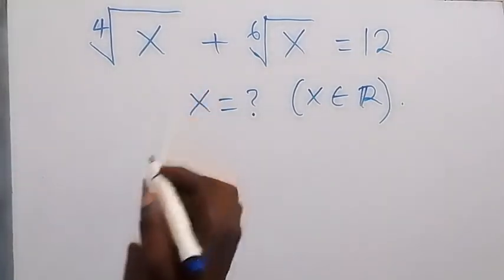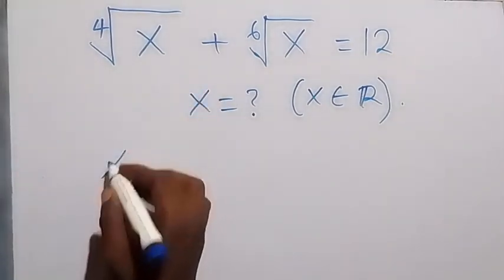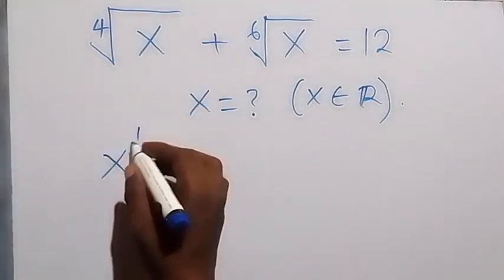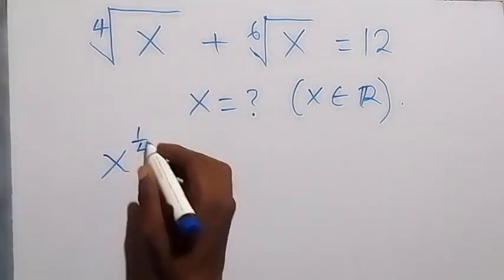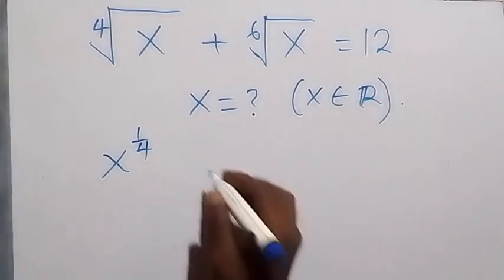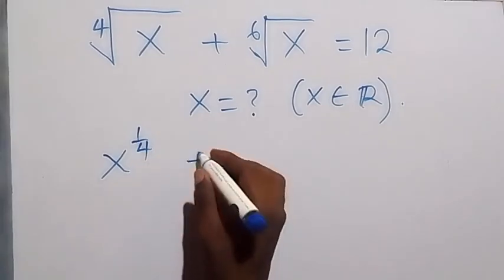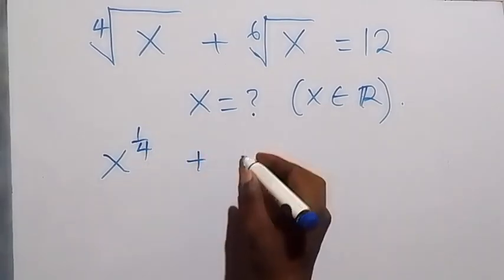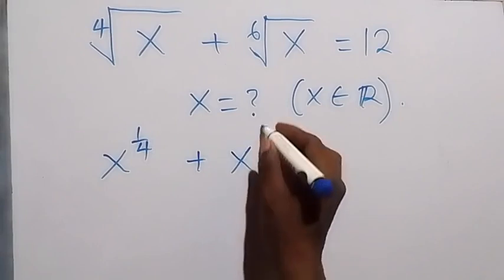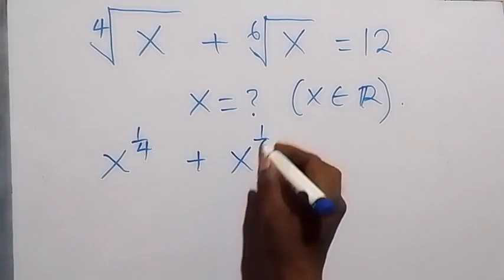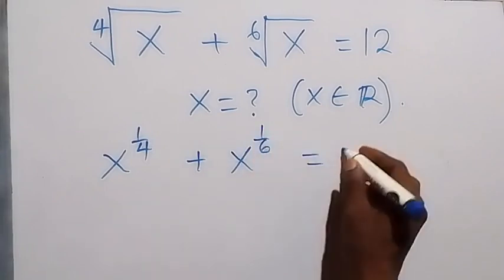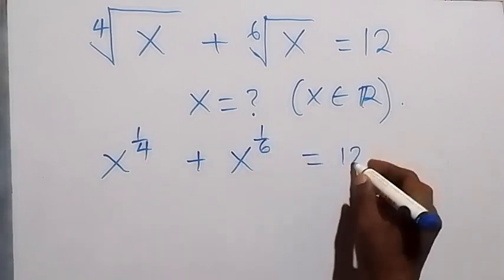Let's write this using the law of indices: x raised to the power of 1 over 4, plus x raised to the power of 1 over 6, equals 12.